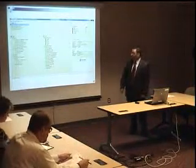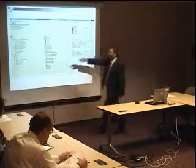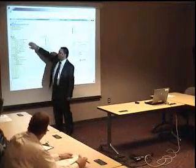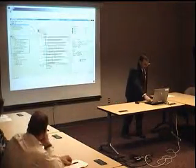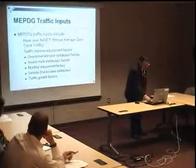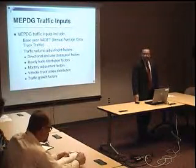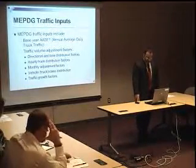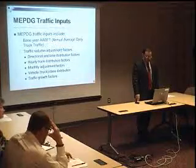This is a screenshot of the Mechanistic Empirical Pavement Design Guide. At the top you can see the inputs, which include general information, traffic, climate, and pavement structure. The focus in this project is on the traffic inputs. These include base year, annual average daily truck traffic, traffic volume adjustment factors including directional and lane distribution factors, hourly truck distribution factors, monthly adjustment factors, vehicle or truck classification distribution factors, and traffic growth factors.